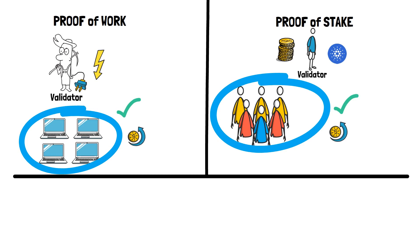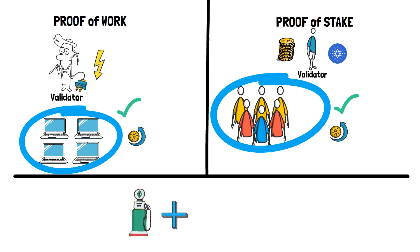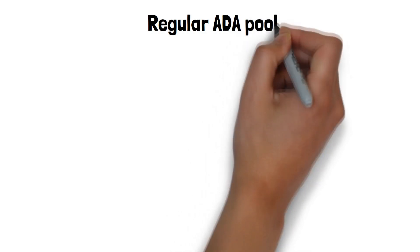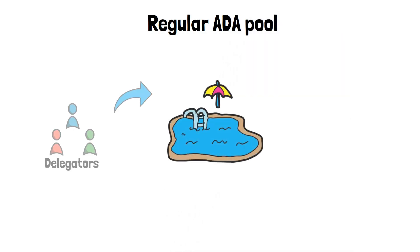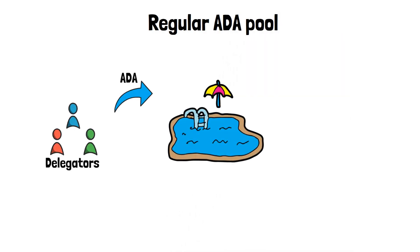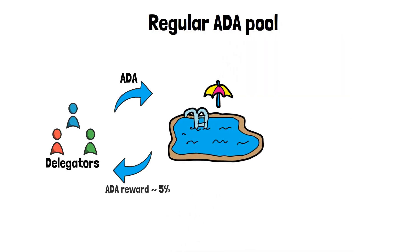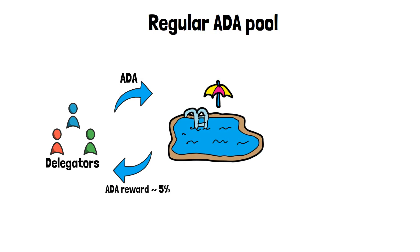The outcome of both methods is the same — both receive a reward which consists of a gas fee plus a block reward. Cardano has a feature of staking pools where delegators delegate their ADA to a pool and receive around 5% APY.